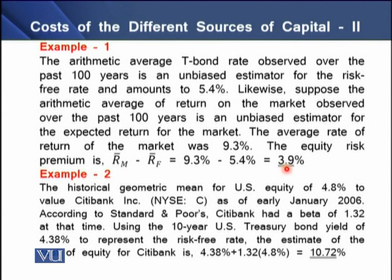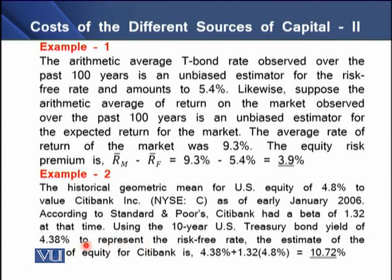We can also use historical geometric means. In example 2, the historical geometric mean for US equity of 4.8% is used to value Citibank as of early January 2006 — this is the market return RM. According to Standard & Poor's, Citibank had a beta of 1.32, using the 10-year US Treasury bond yield of 4.38% as the risk-free rate RF. Adding the risk-free rate to the risk premium of 4.8%, the cost of equity is 10.72%.